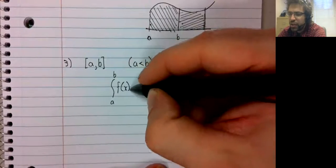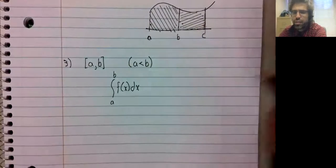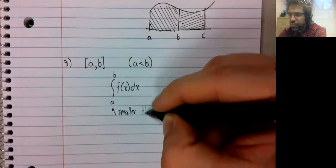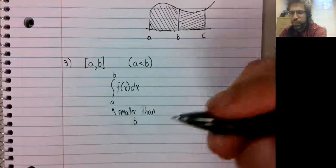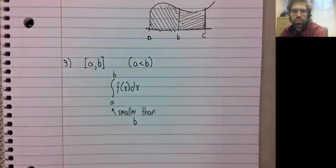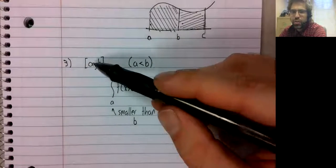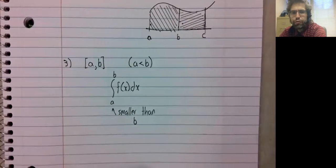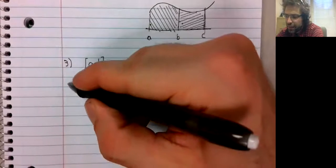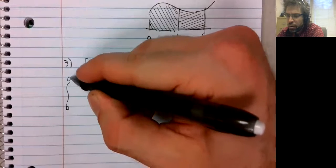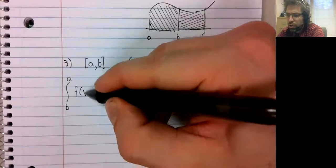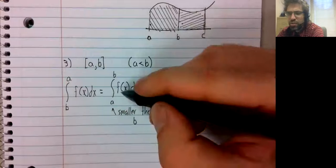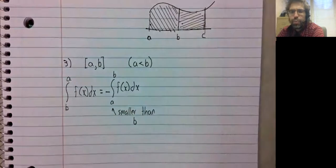So when you have an integral from a to b of f(x)dx, this a is the smaller of the two numbers. It's the left hand endpoint, and we're just going to define it to be this integral with a negative sign in front of it.